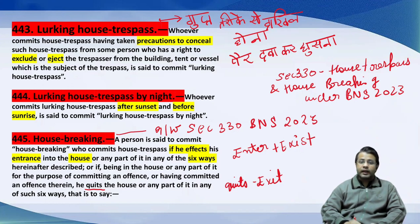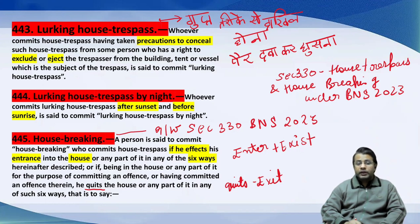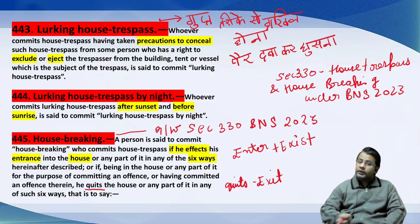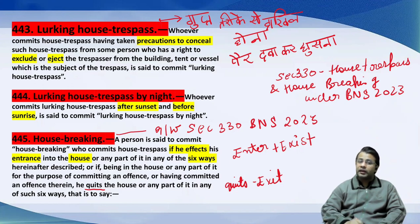अब फिर पढ़ते हैं — lurking house trespass by night। House trespass by night क्या होता है — whoever commits lurking house trespass after sunset and before sunrise — अगर यही 443 वाली चीज़ करते हैं तो वो lurking house trespass by night हो जाएगा, और 444 में आ जाएगा।